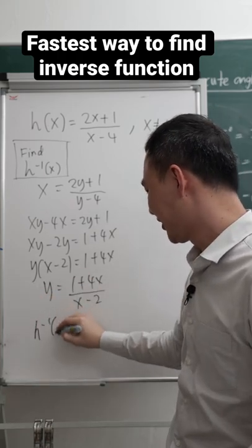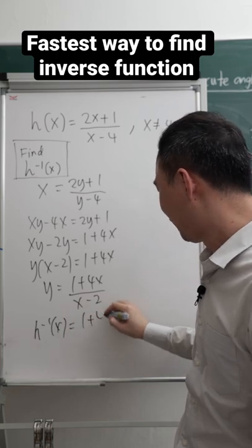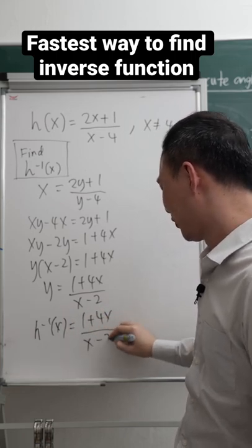My y will be h inverse x is 1 plus 4x over x minus 2. This is the fastest way to do this.